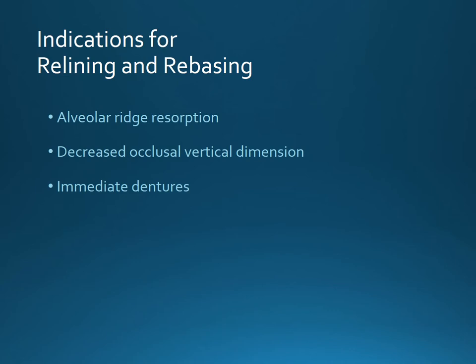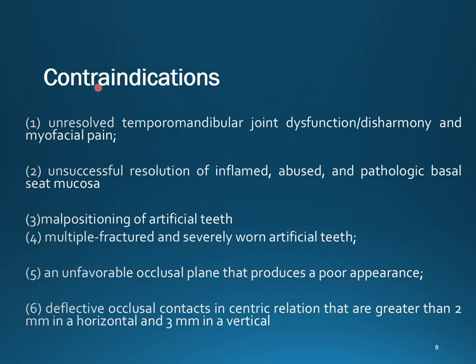Indications for relining include alveolar ridge resorption, decreased occlusal vertical dimension, and in the case of an immediate denture — you will have to reline them again after the healing of the tissue.